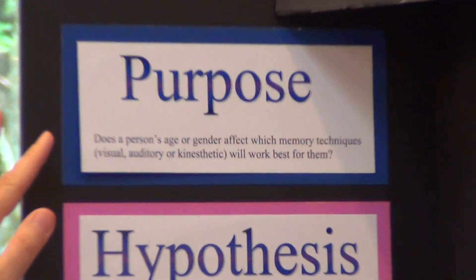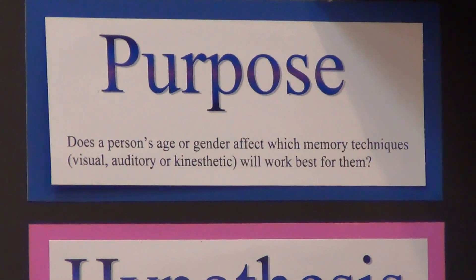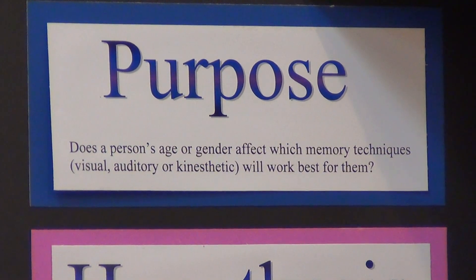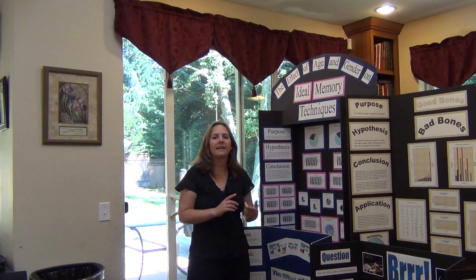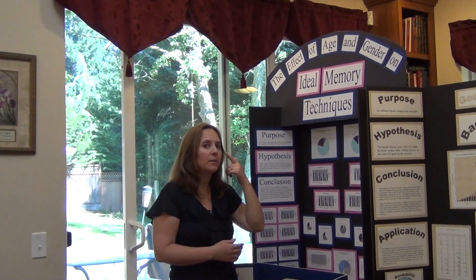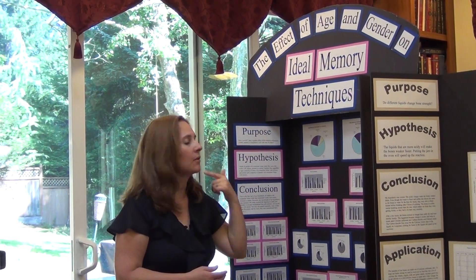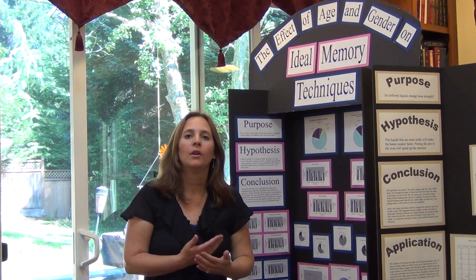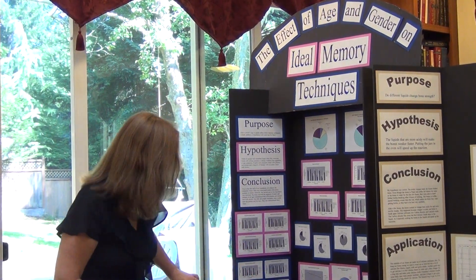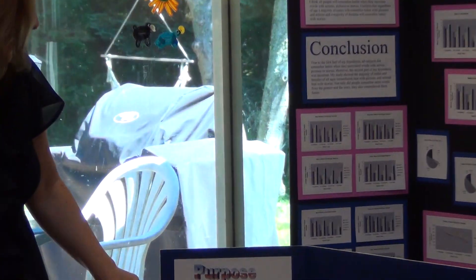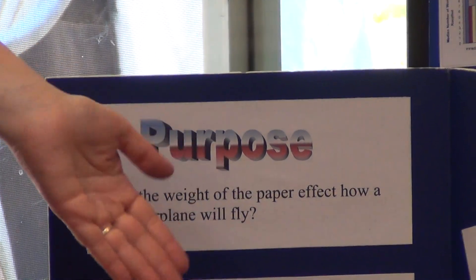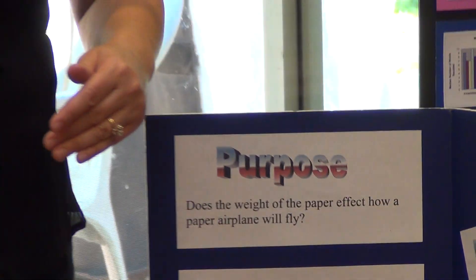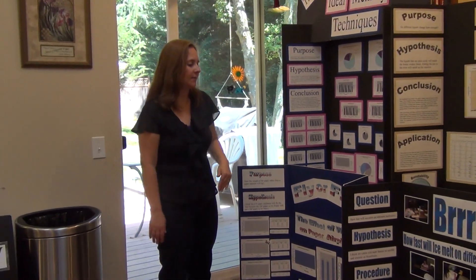This one: does a person's age or gender affect the memory techniques that will work best for them? She was able to measure that by counting the number of nouns the person could remember, whether it was through visual, auditory, or kinesthetic means — so that was a measurable question. Down here: does the weight of the paper affect how a paper airplane will fly? That is measurable — you measure the distance of how far the planes could fly with the different weights of paper.